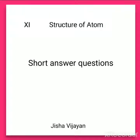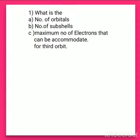Hello students, let us discuss some of the short answer questions related to orbits and orbitals in this video. The first question is: what is the number of orbitals, number of subshells, and maximum number of electrons that can be accommodated for the third orbit? In this question, third orbit means the principal quantum number n is equal to 3.